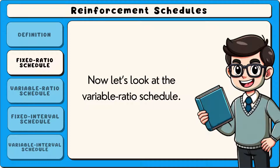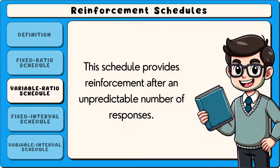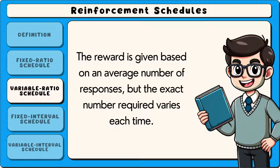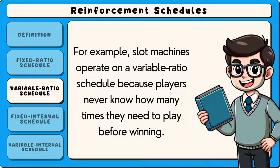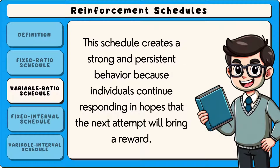The variable ratio schedule provides reinforcement after an unpredictable number of responses. The reward is given based on an average number of responses, but the exact number required varies each time. For example, slot machines operate on a variable ratio schedule because players never know how many times they need to play before winning. This schedule creates a strong and persistent behaviour because individuals continue responding in hopes that the next attempt will bring a reward.